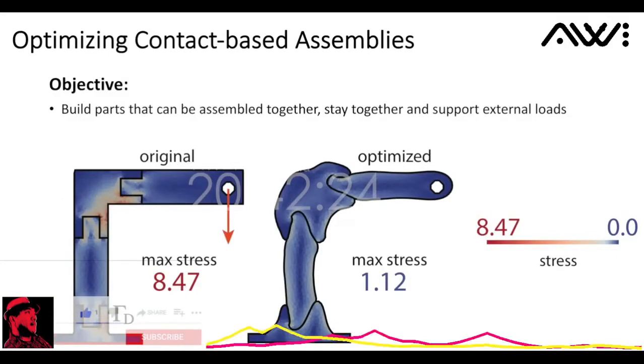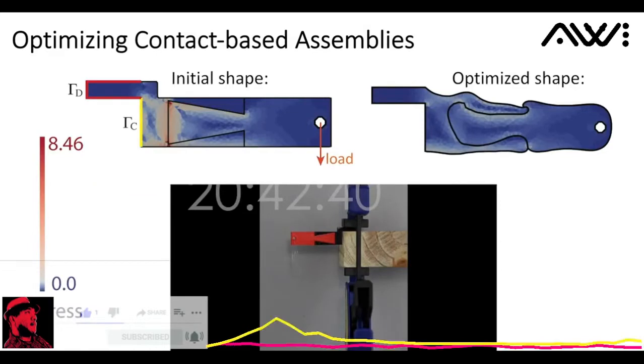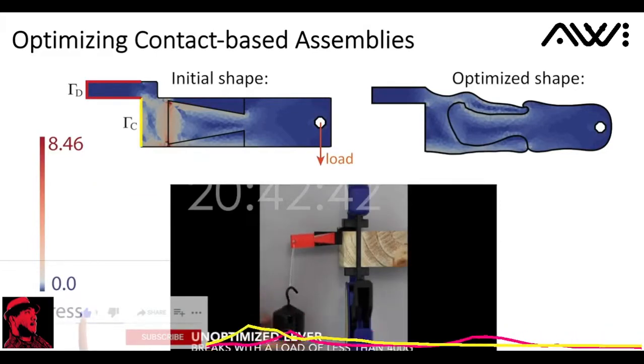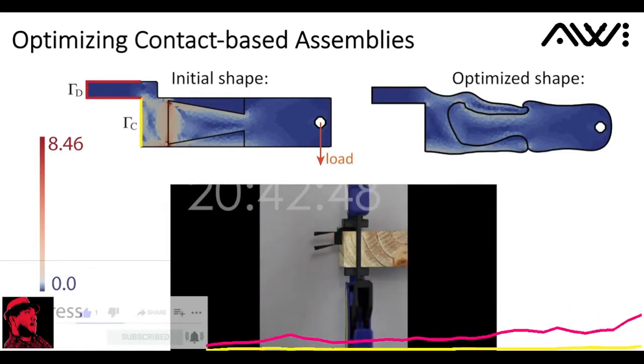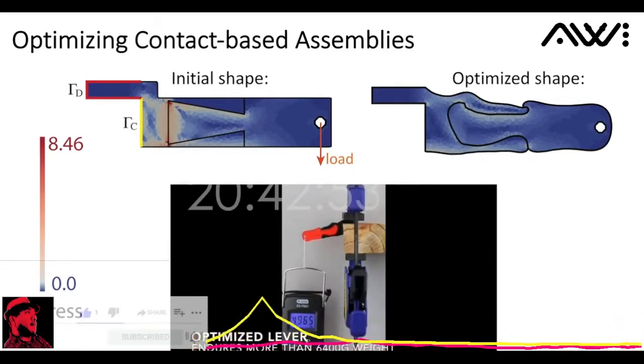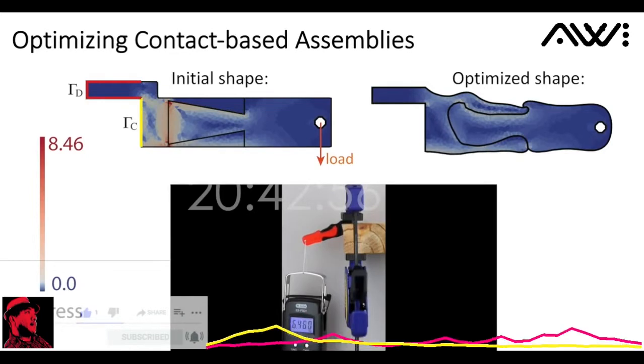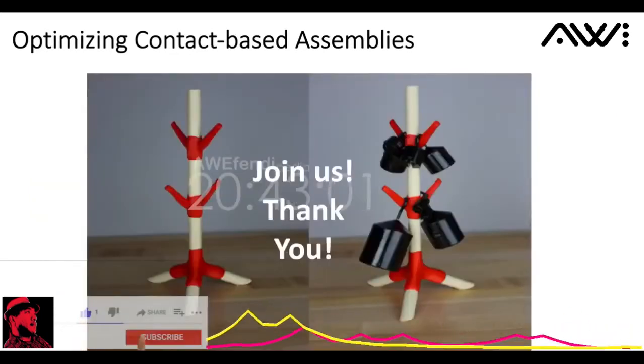Designing and producing multi-piece objects can be very useful in building more complex objects out of simpler parts. We want such assemblies to be easy to assemble, to support user-defined external loads, and not to fall apart when in use. They also need to satisfy various constraints, for example, on their shape or weight. Our framework uses efficient shape derivative computations to optimize parts in the presence of contact and friction, minimizing an objective like stress under physical and geometric constraints. We validated our results both computationally and on fabricated parts, obtaining structures that can hold loads that are more than 10 times higher compared to the initial shapes. If you want to know more, please join us for our presentation.